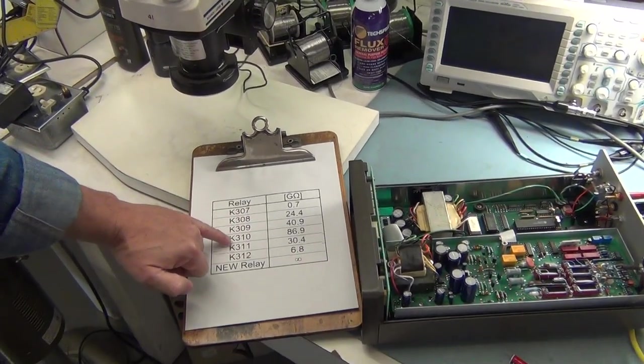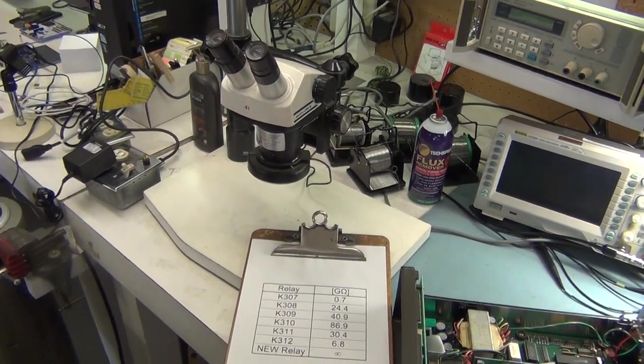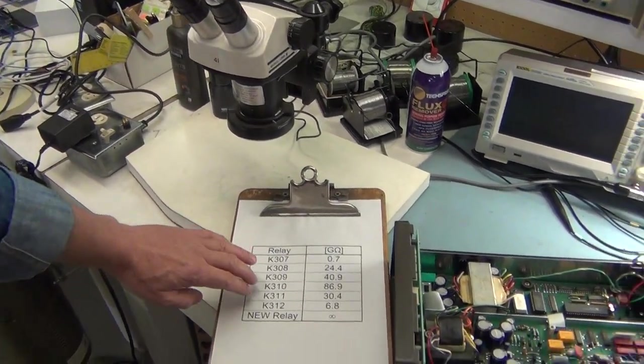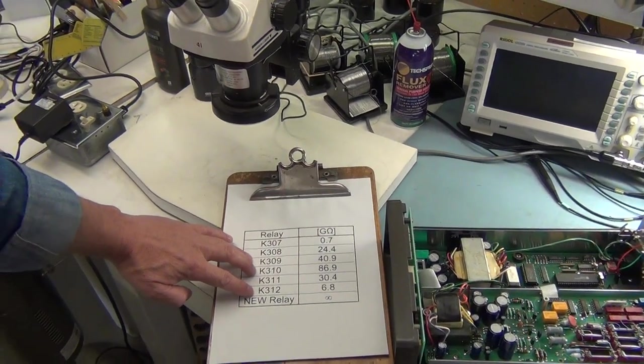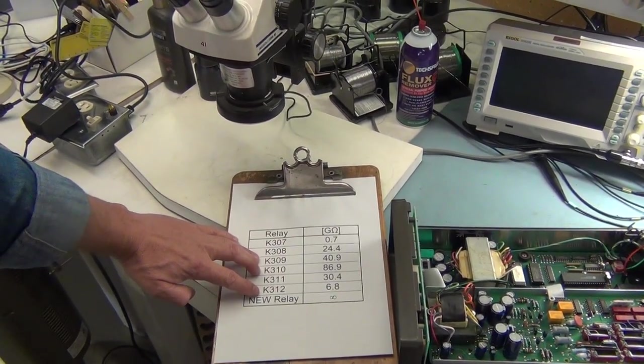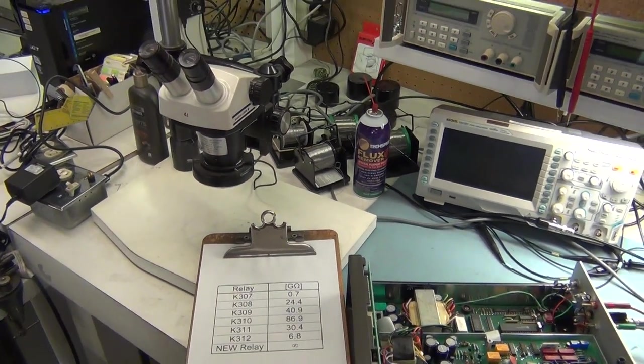But these other relays that were in the circuit were also trouble causers. K309, 310, and 312 were the ones that really mattered as far as making the picoamp range work. But since I was in here, I went ahead and changed them all, and I'm glad I did.